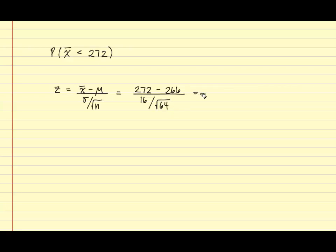After performing the math, we obtain a Z score equaling 3. So we've converted the probability of X bar being less than 272 to the probability that Z is less than 3.